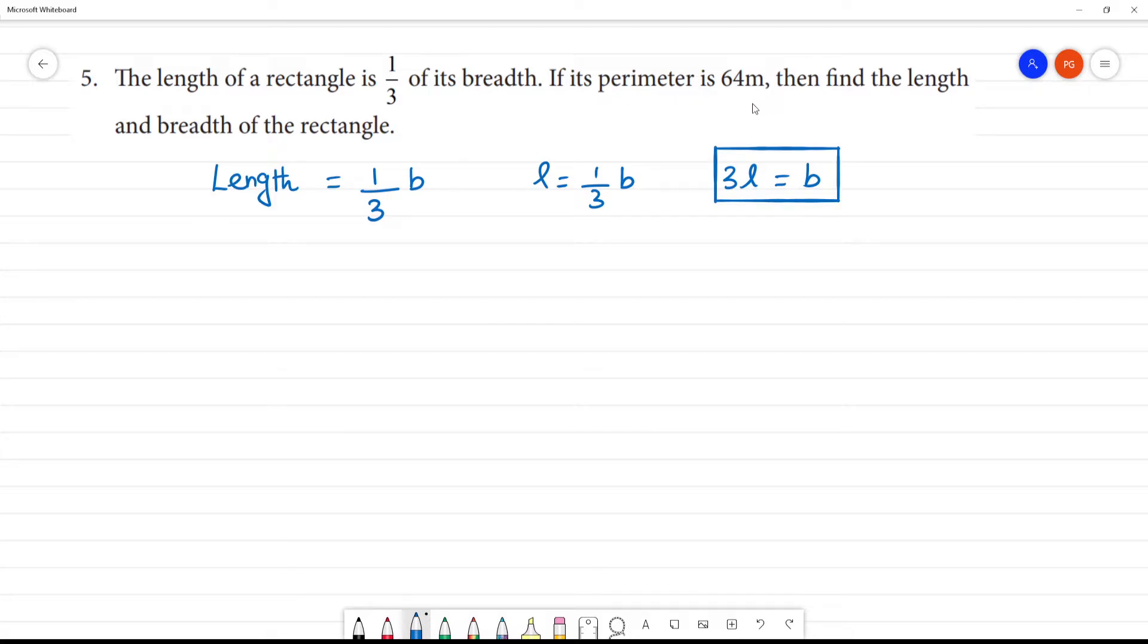If its perimeter is 64 m, perimeter of the rectangle is 2 into l plus b. That is equal to 64 m. Clear?